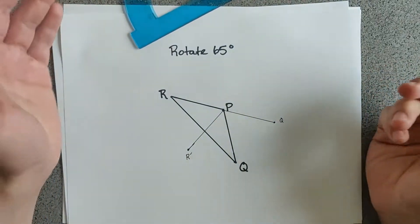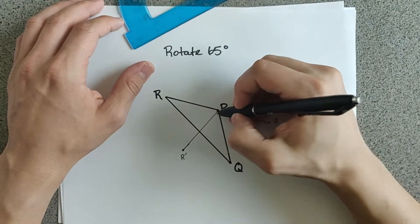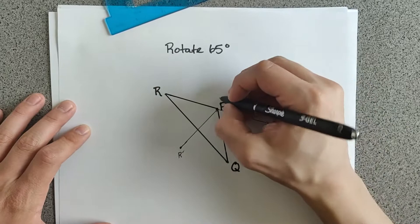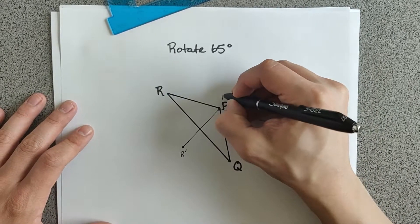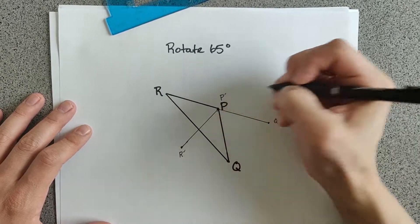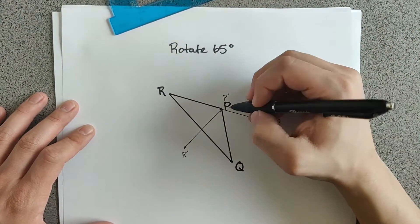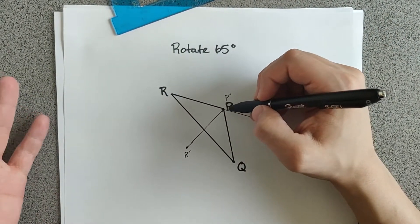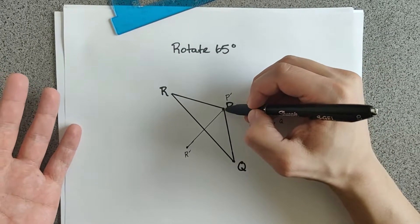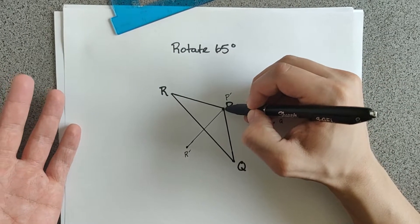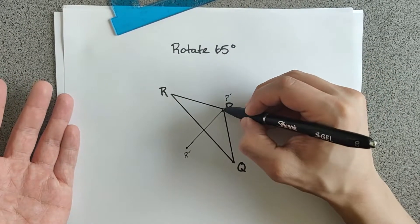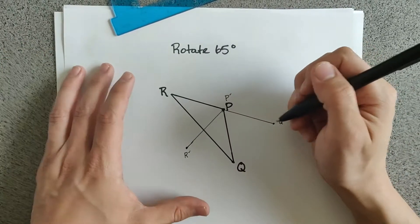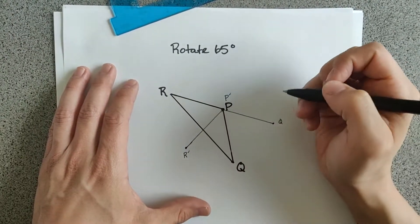Now the last point we have is P. In this case, P is the same point as P prime, because drawing a straight line from P to P means we just land right there — we don't move. So P and P prime are the exact same spot.